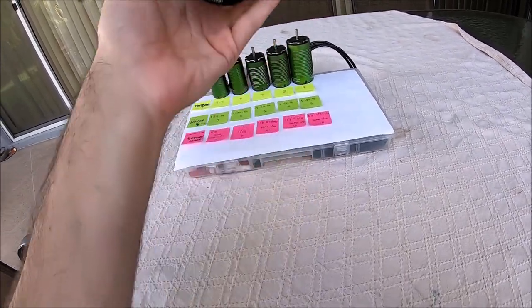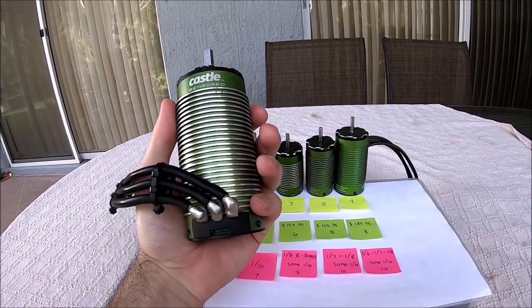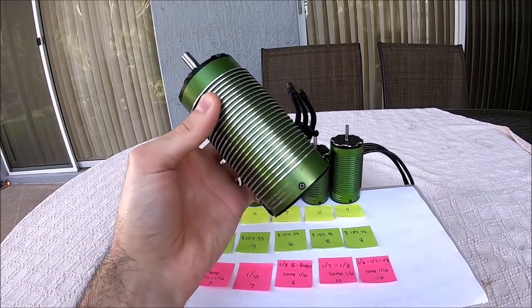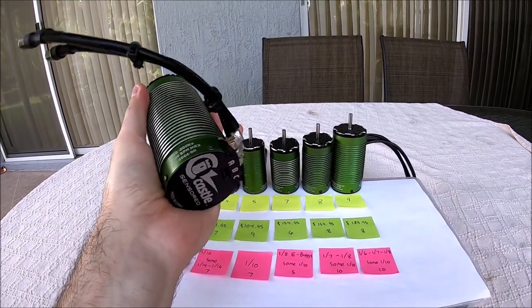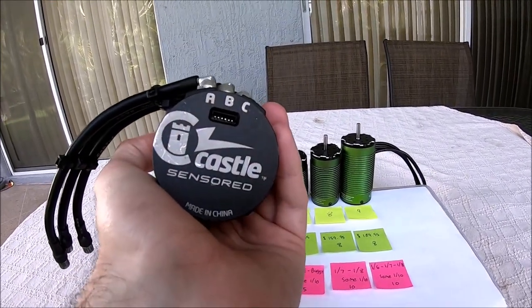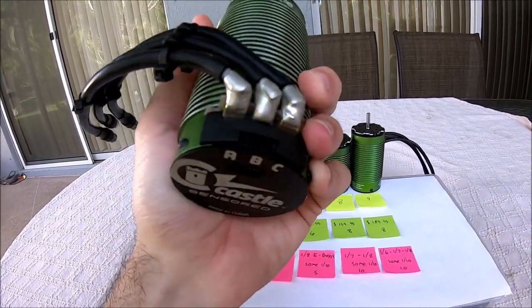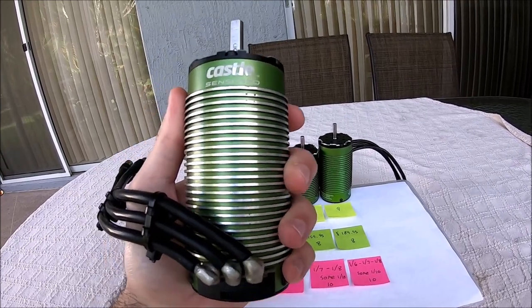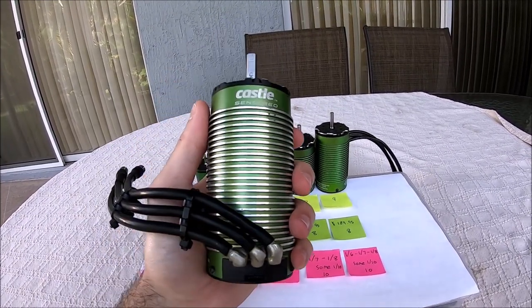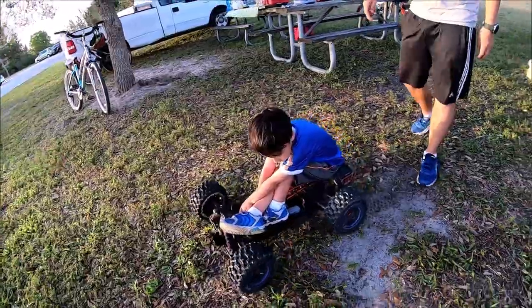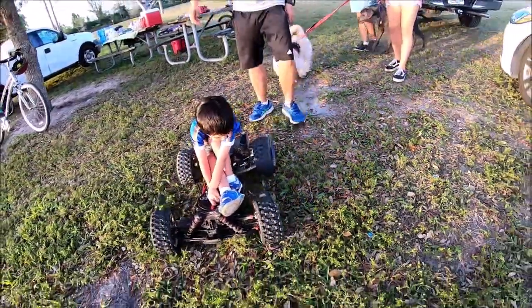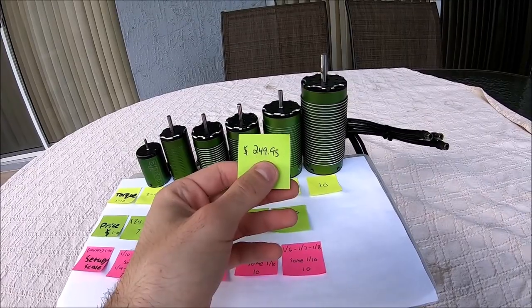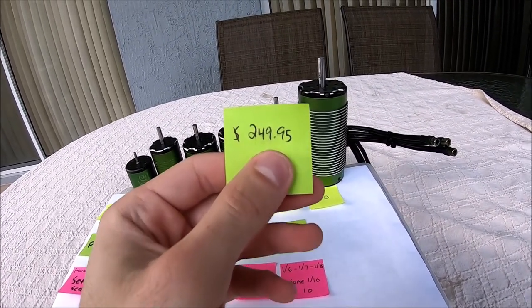I feel like if I throw this at someone, I could knock them out. Coming in at over 2 pounds, we have the absolute biggest motor that Castle has to offer. 3 to 12S voltage capable, twin sensor ports for accessibility reasons, and solder tabs. This motor is possibly the one and done motor that you're really going to need for anything big. I'm not even going to explain this one, I'm sure you guys know.